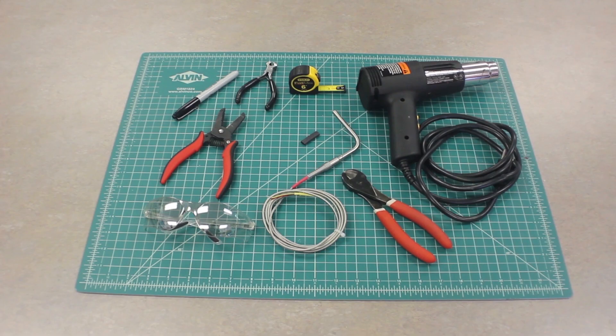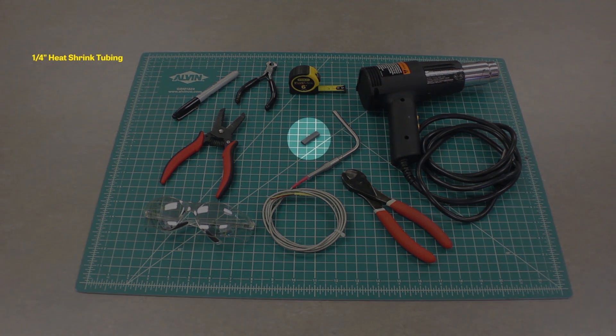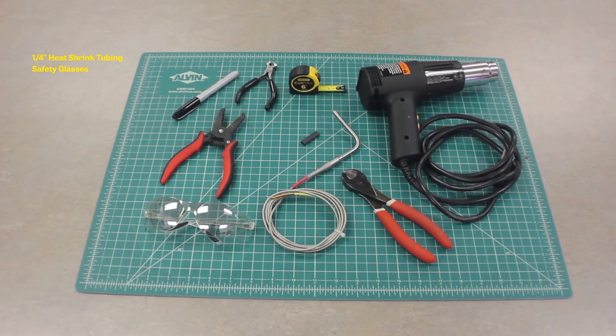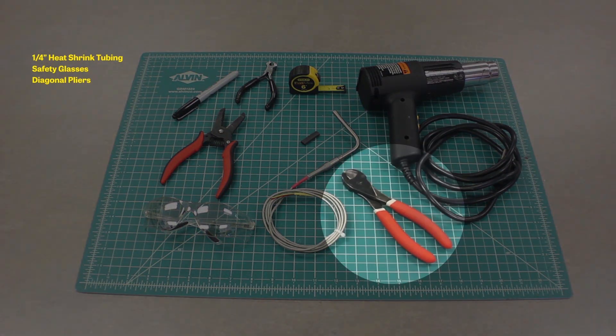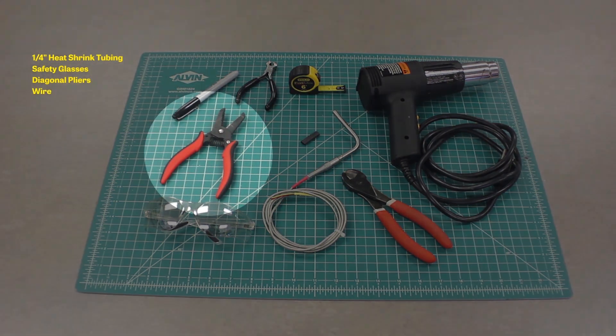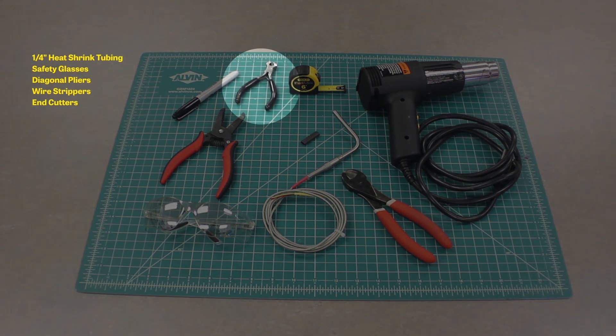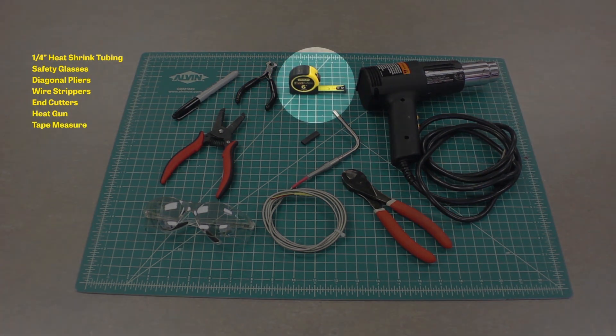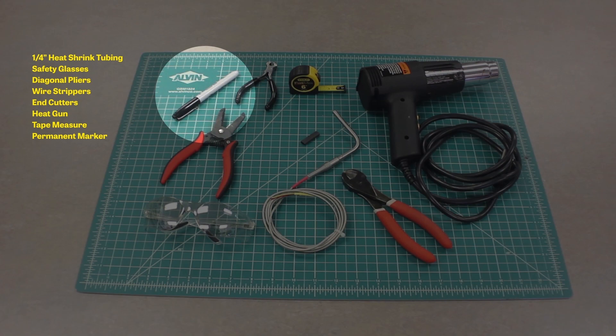To perform this task, you will need the following tools and materials: a one inch length of quarter inch heat shrink tubing, safety glasses, diagonal pliers, wire strippers suitable for 20 gauge wire, end cutters, a heat gun, a tape measure, and a permanent marker.